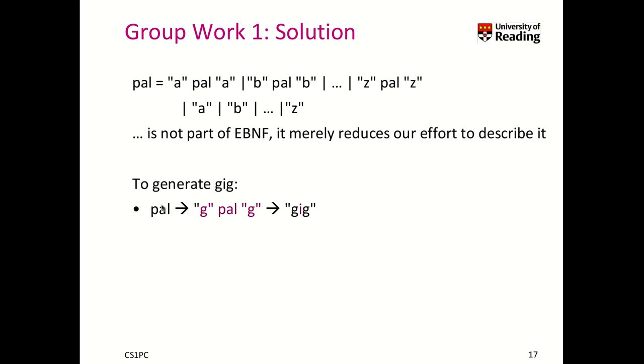So let's try it to generate the word gig. We can use pal, and from pal, we can apply the rule for g. Well, the rule for g says take g, then take pal, and then take g again. That's doable. And then we transform pal using one of these rules here, just taking the i, and therewith we get gig.